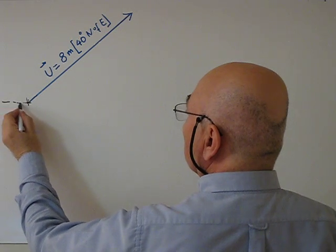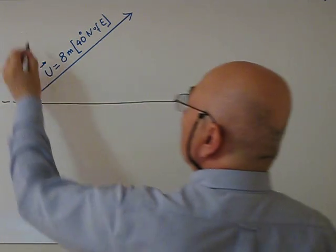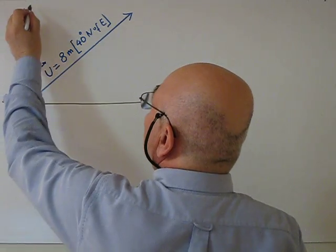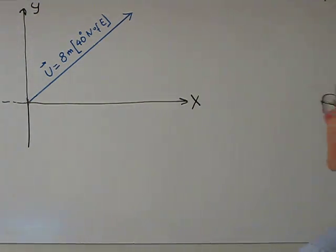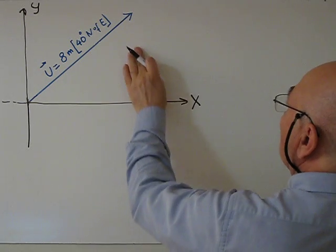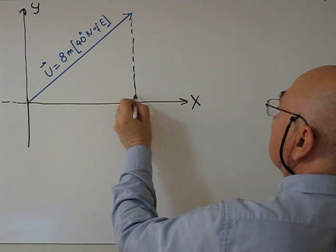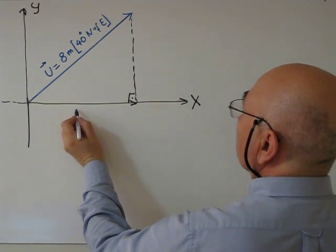I bring my Cartesian x-y system. This is the x coordinate, this is the y coordinate. So I need to find the projection of my vector on the x-axis. I go vertical like this, so this is 90 degrees. This vector will be ux.